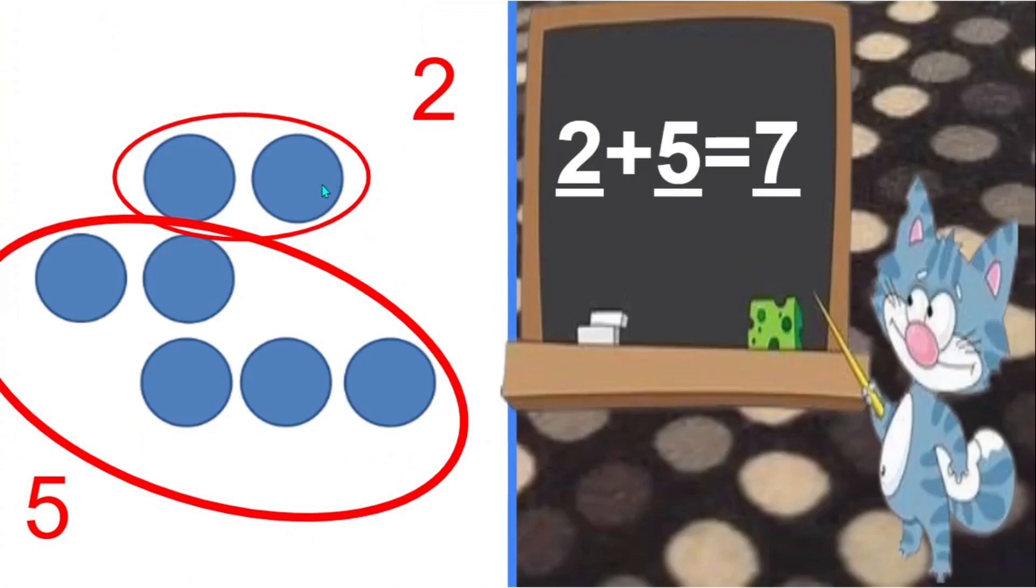I saw two and five. Two and five is seven.